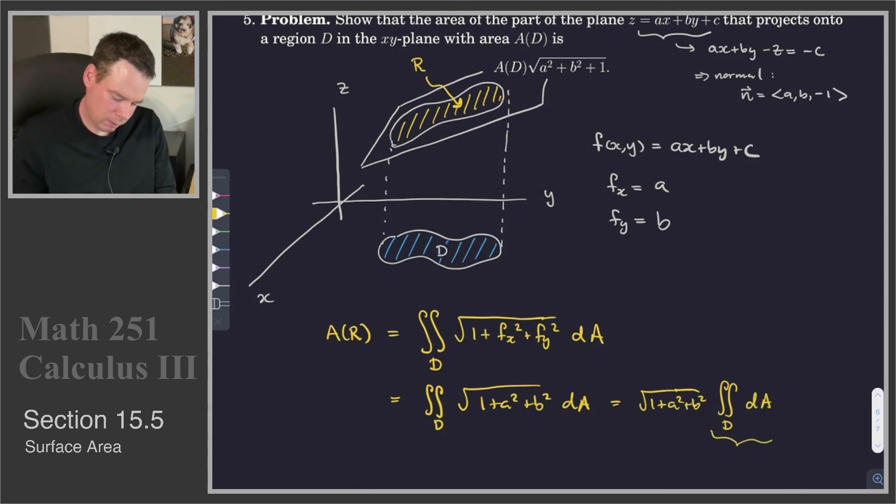And this is precisely the integral that represents the area of D. And so there's our result. It's the square root of 1 plus a squared plus b squared times the area of the region D. And there we go.